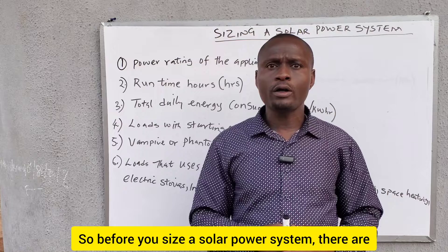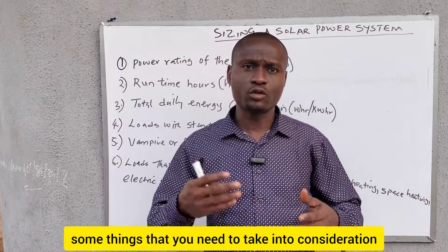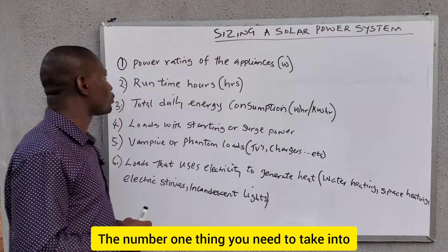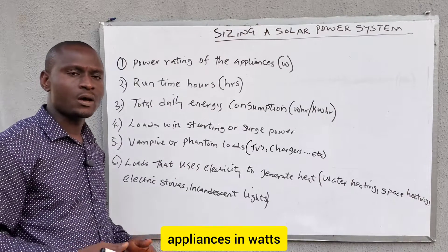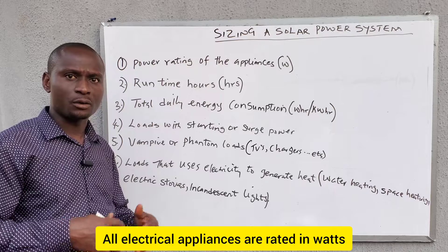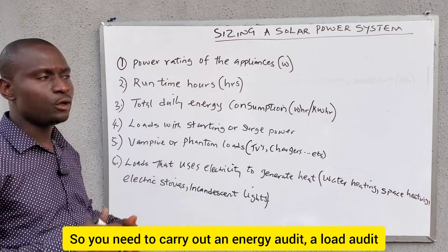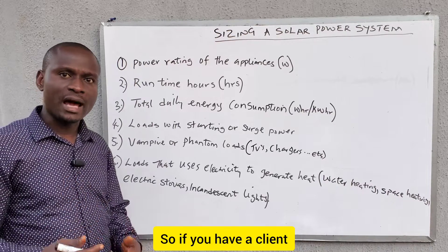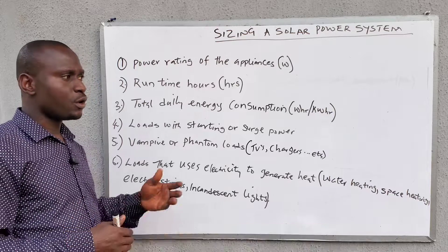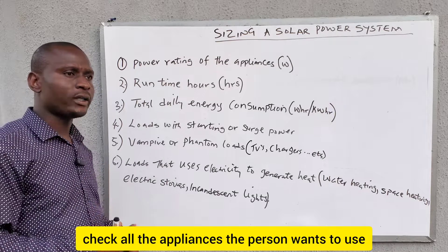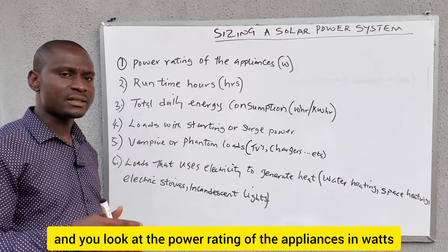Before you size a solar power system, there are some things you need to take into consideration. The number one thing is the power rating of the appliances in watts. All electrical appliances are rated in watts — that is the power. So you need to carry out an energy audit, a load audit. If you have a client interested in installing a solar power system, go to the person's house and check all the appliances they want to use, and look at the power rating in watts.